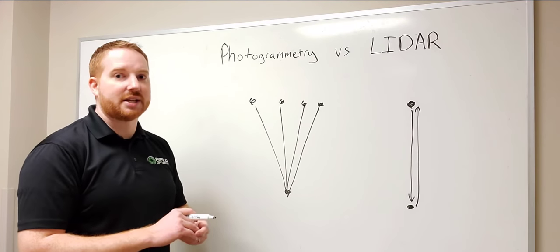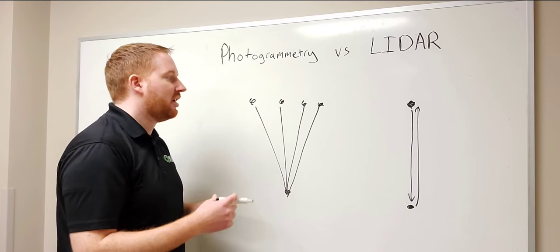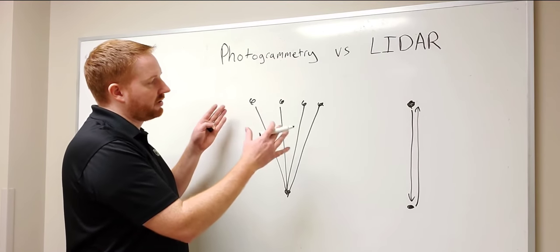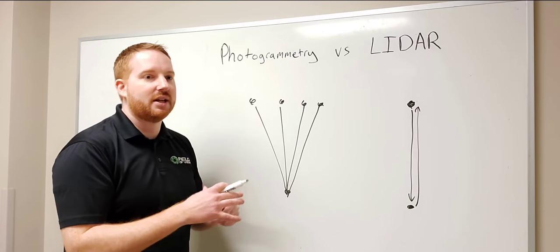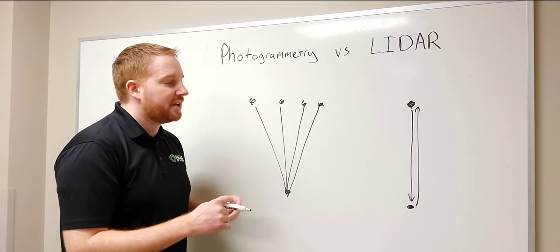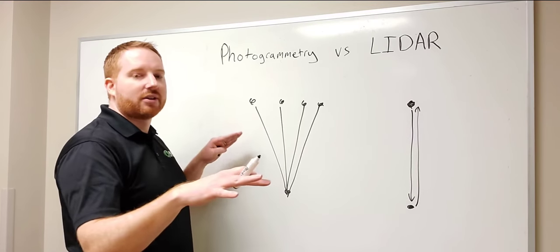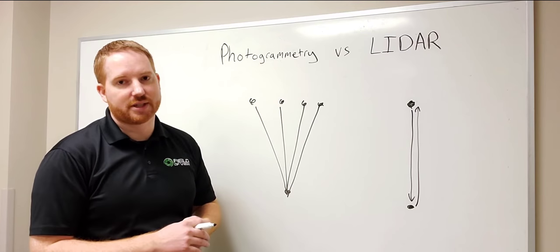The photogrammetry based payload tends to be less expensive and it has some other benefits besides that. Because you're doing everything photo based, you're capturing a high amount of overlap with a high amount of detail. So not only do you get a nice 3D model, but you also get a very crisp and clean orthomosaic.